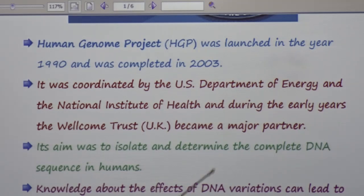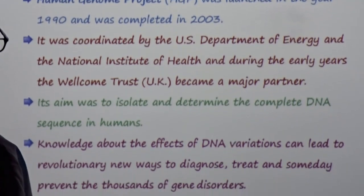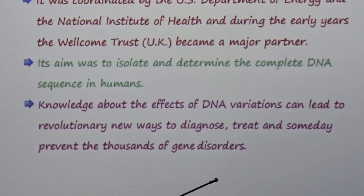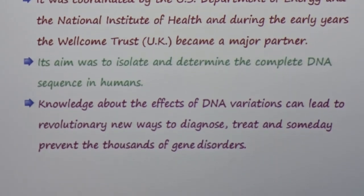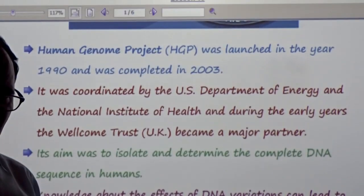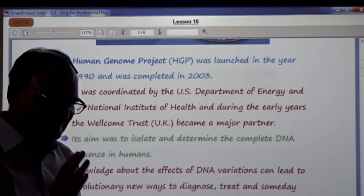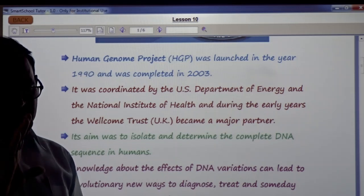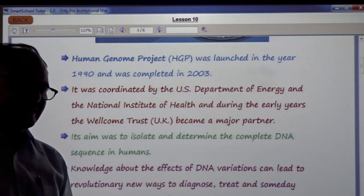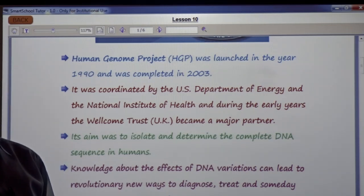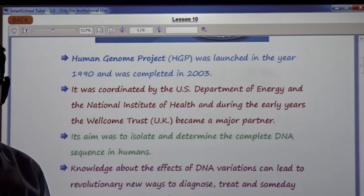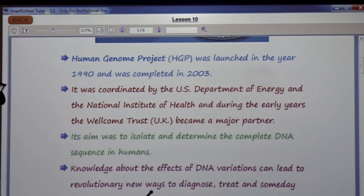Knowledge about the effect of DNA variation can lead to revolutionary new ways to diagnose, treat, and someday prevent thousands of genetic disorders. One important point is understanding the sequencing of DNA molecules, which are the blueprint of life. If we do not know the number of genes present in any life form, we cannot relate. This project opens the facts about how many genomes and what number of DNA molecules are acting as genes.